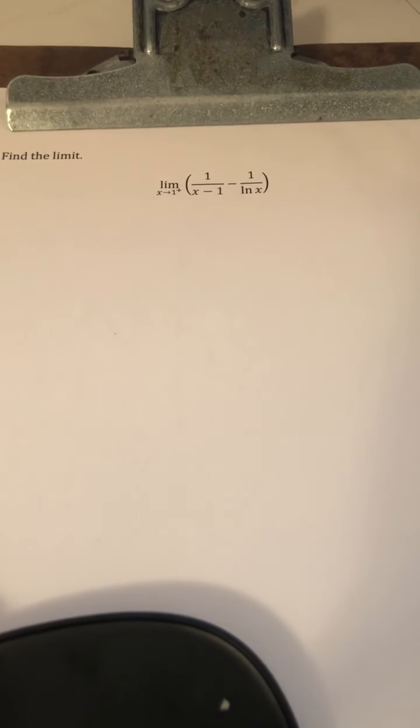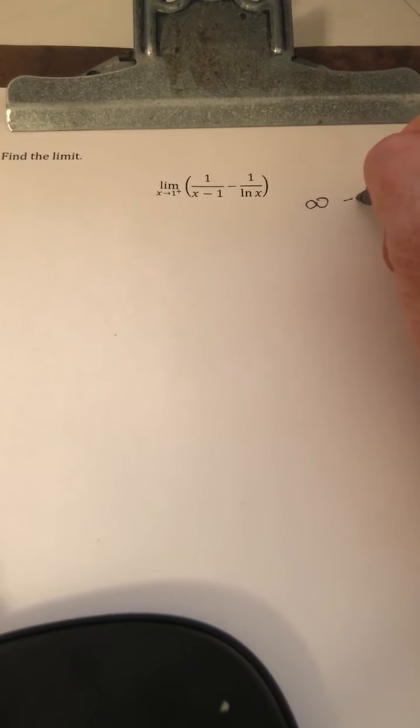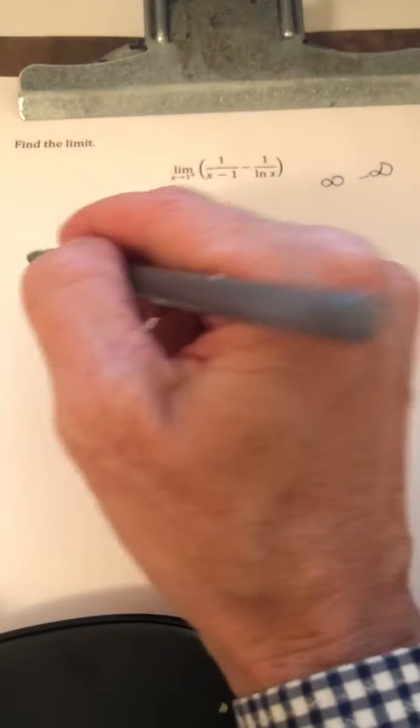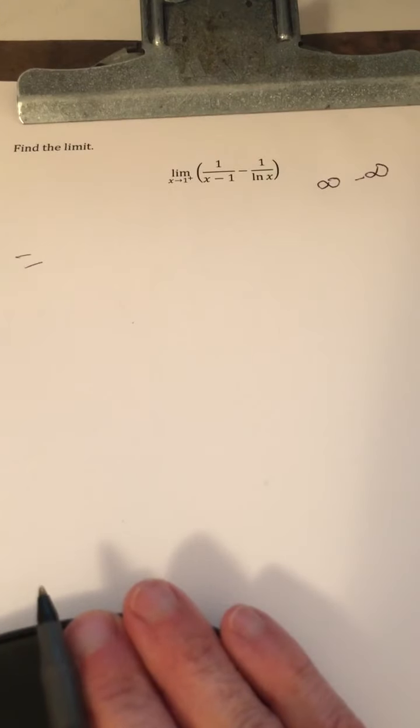So if you try to use direct substitution, you notice that we have an indeterminate form infinity minus infinity. So what we're going to do is rewrite this as a quotient.